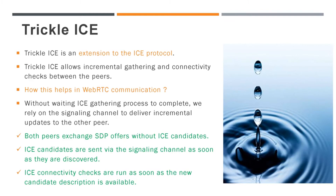The signaling server can communicate with each peer because each peer has been connected to the signaling server. Both peers exchange SDP offers without ICE candidates first. Then ICE candidates are sent via the signaling channel as soon as they are discovered. ICE connectivity checks are run as soon as the new candidate description is available.